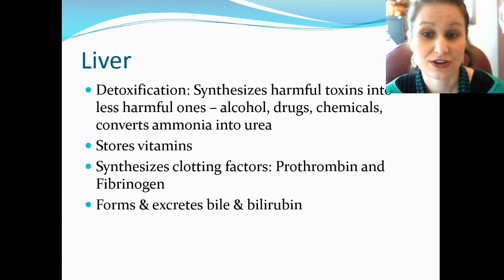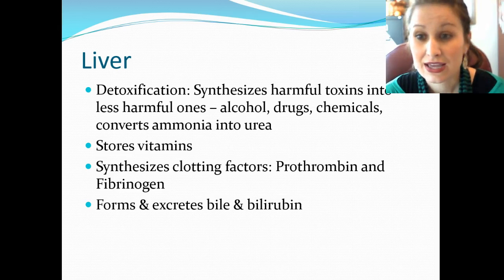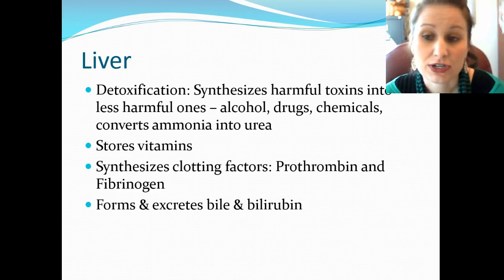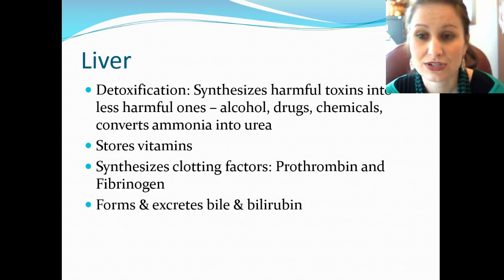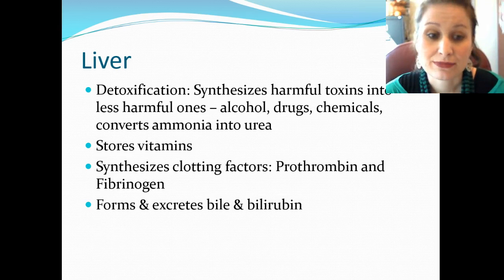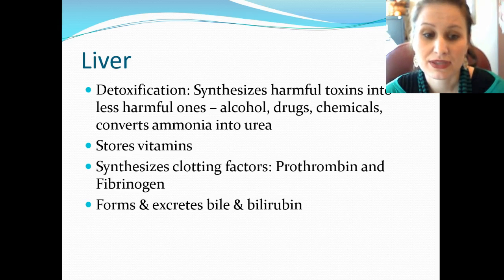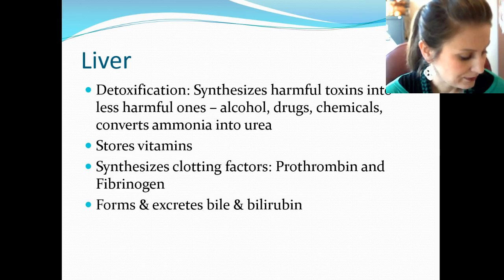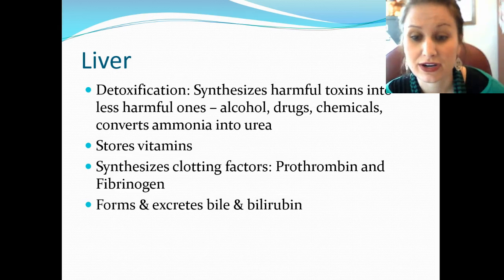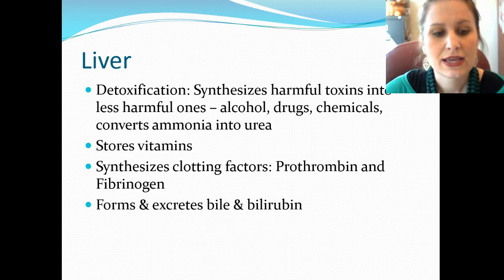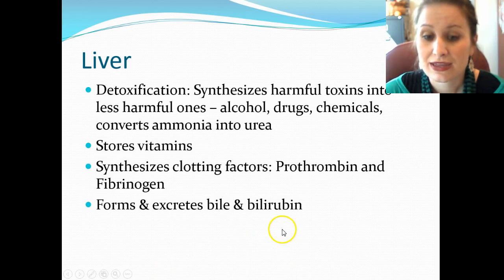The liver is responsible for detoxification — converting harmful toxins into less harmful ones. This is where alcohol, drugs, and chemicals are processed. It converts ammonia into urea; if ammonia is not broken down and excreted it can cause serious confusion. The liver also stores vitamins and synthesizes clotting factors like thrombin and fibrinogen. A prolonged PT indicates risk for bleeding or low platelets.